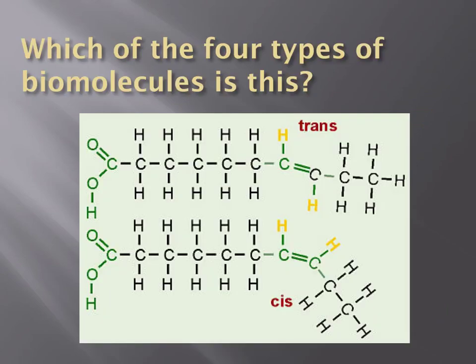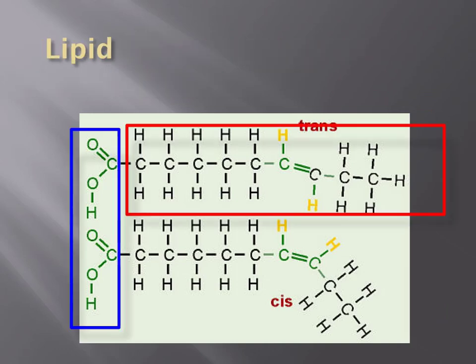What type of biomolecule do you think you're looking at now? Take 15 seconds, pausing the video, and think of a reason or two why. Again, this is an example of a lipid. It contains the two different groups discussed earlier: a hydrocarbon chain — a fatty acid chain — highlighted in red, and a glycerol group highlighted in blue.